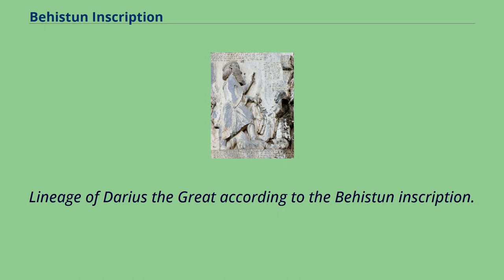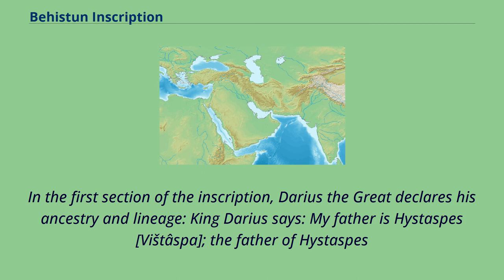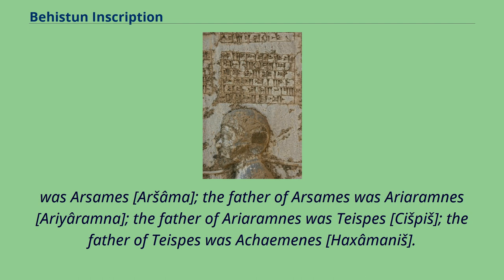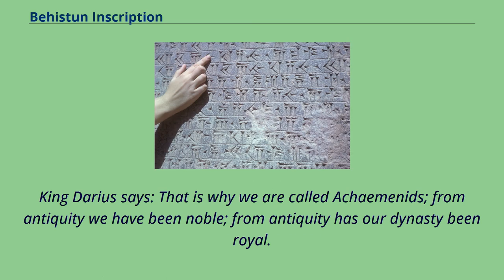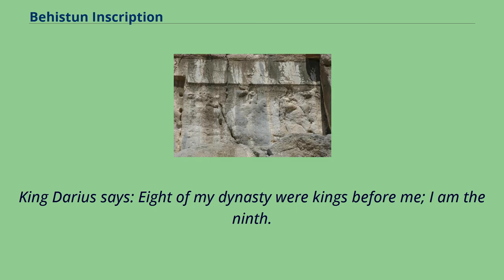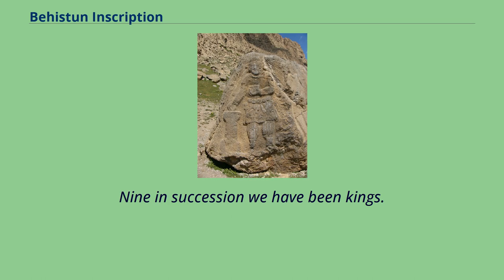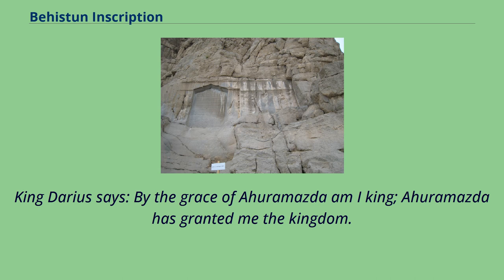In the first section of the inscription, Darius the Great declares his ancestry and lineage: 'My father is Hystaspes; the father of Hystaspes was Arsames; the father of Arsames was Ariaramnes; the father of Ariaramnes was Teispes; the father of Teispes was Achaemenes. That is why we are called Achaemenids — from antiquity we have been noble, from antiquity has our dynasty been royal. Eight of my dynasty were kings before me; I am the ninth. Nine in succession we have been kings. By the grace of Ahuramazda am I king; Ahuramazda has granted me the kingdom.'